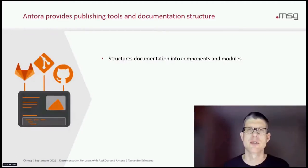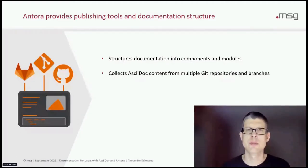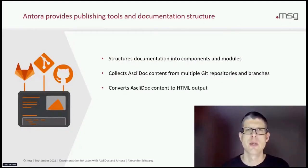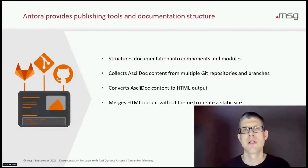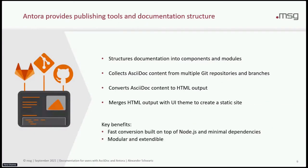Antora provides you with the publishing tools and the documentation structure. The documentation is structured into components and modules. AsciiDoc will collect content from multiple Git repositories and branches and will convert all the AsciiDoc content it finds to HTML output. It merges the HTML output with a UI theme and creates a static site. The key benefits are that it has a very fast conversion built on top of Node.js and minimal dependencies. It's quite modular and extendable, so you can add the things you need even if they are not part of Antora core.